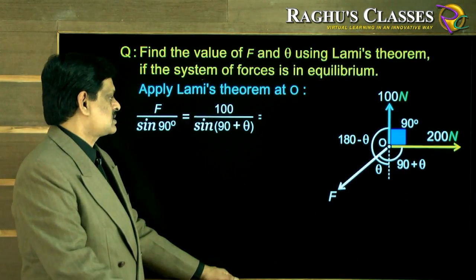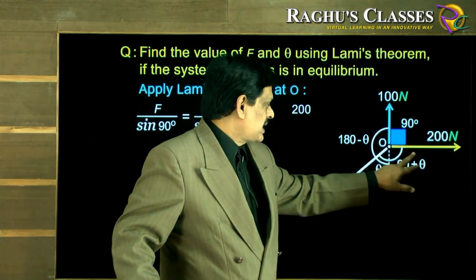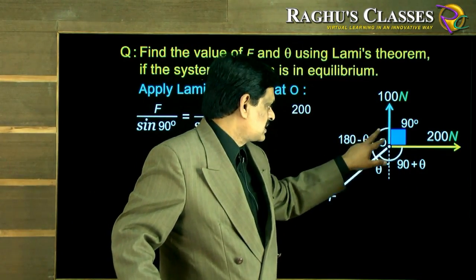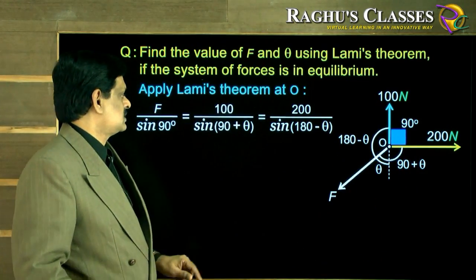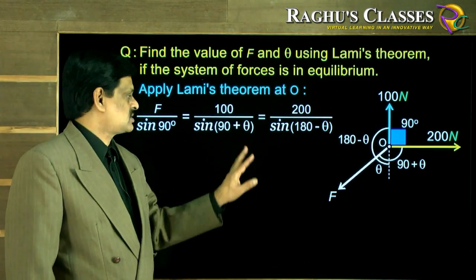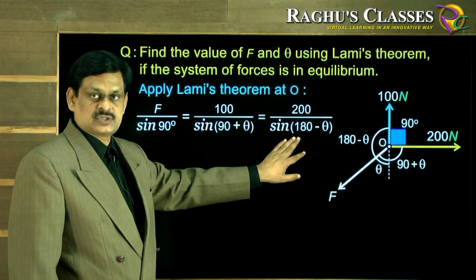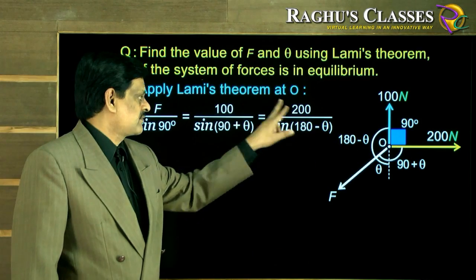This is equal to 200 upon which angle? We have to take this angle, the sine of 180 minus theta. So if you look at these two relations, this and this, the second and third terms, the only unknown here is theta, everything is known.